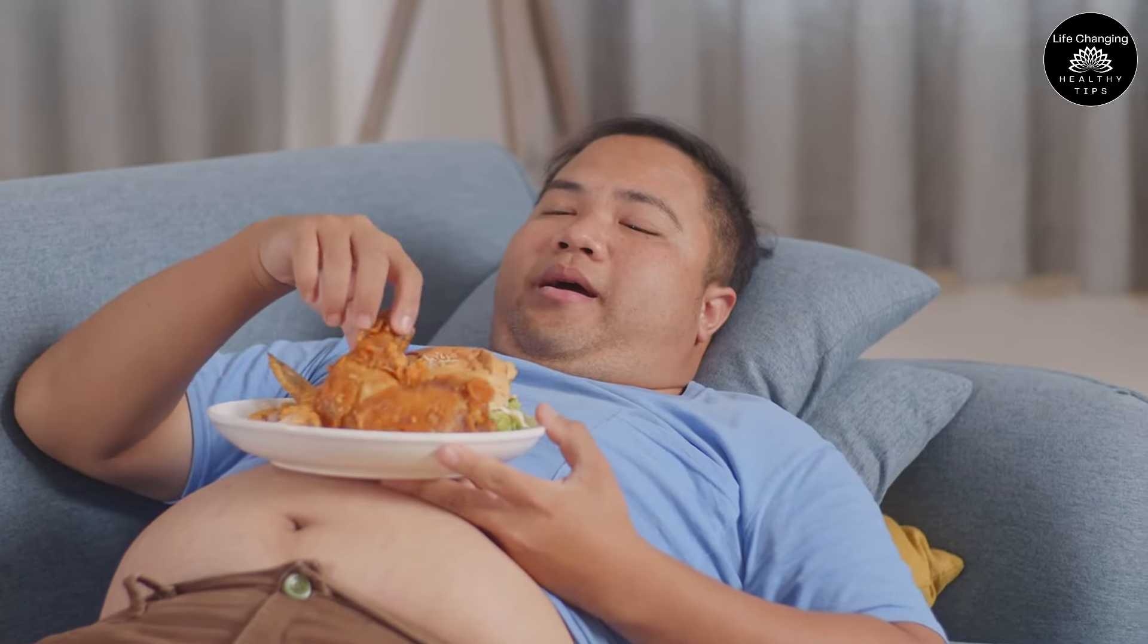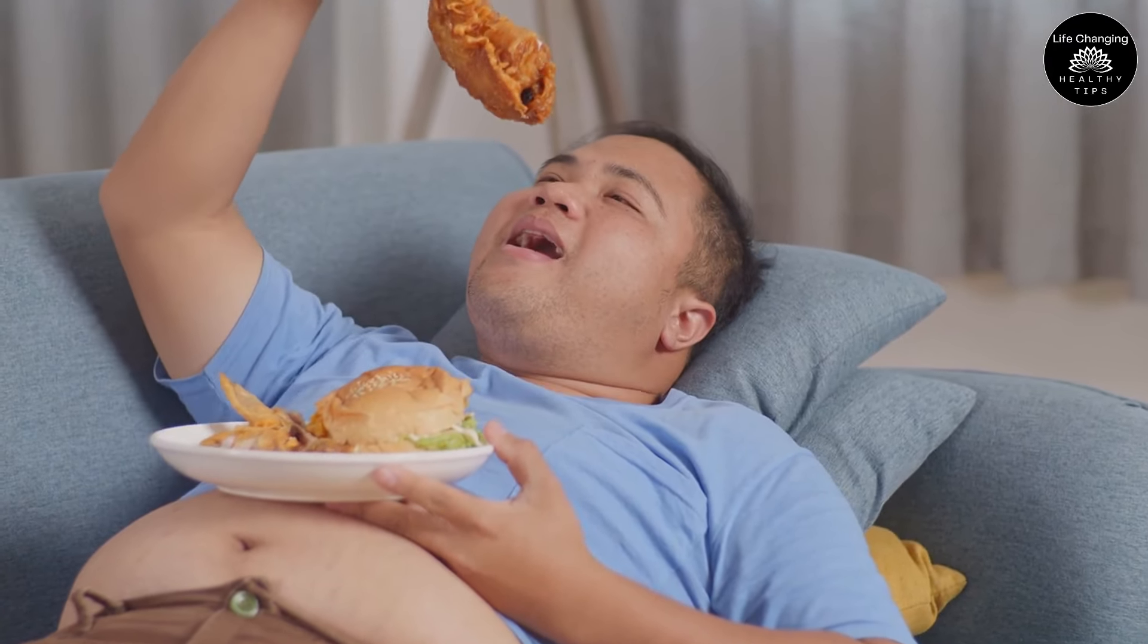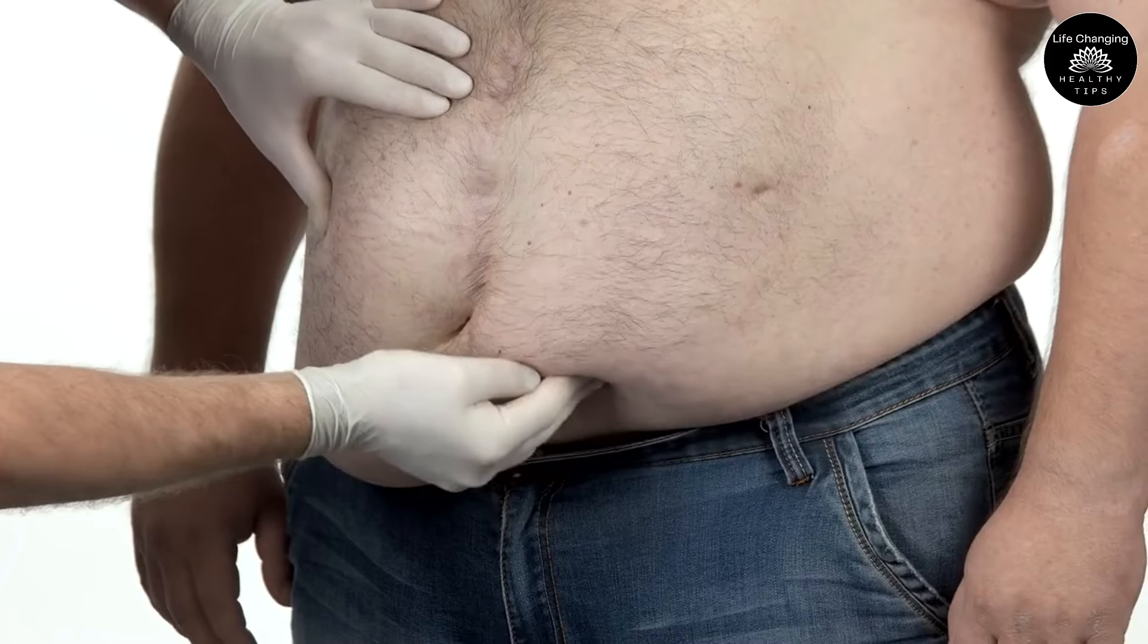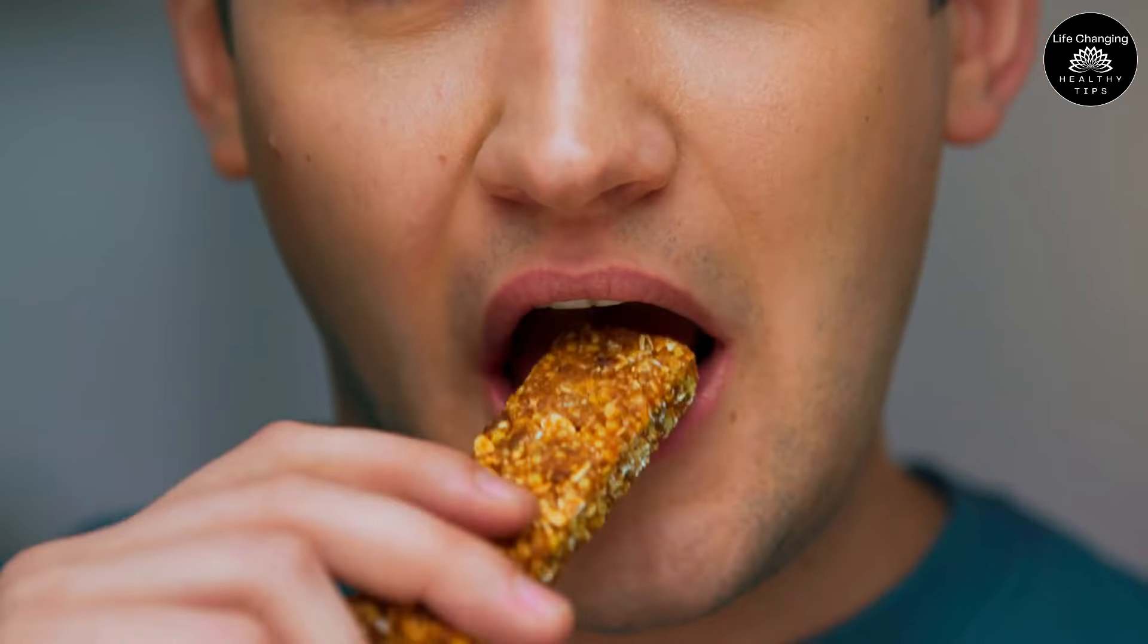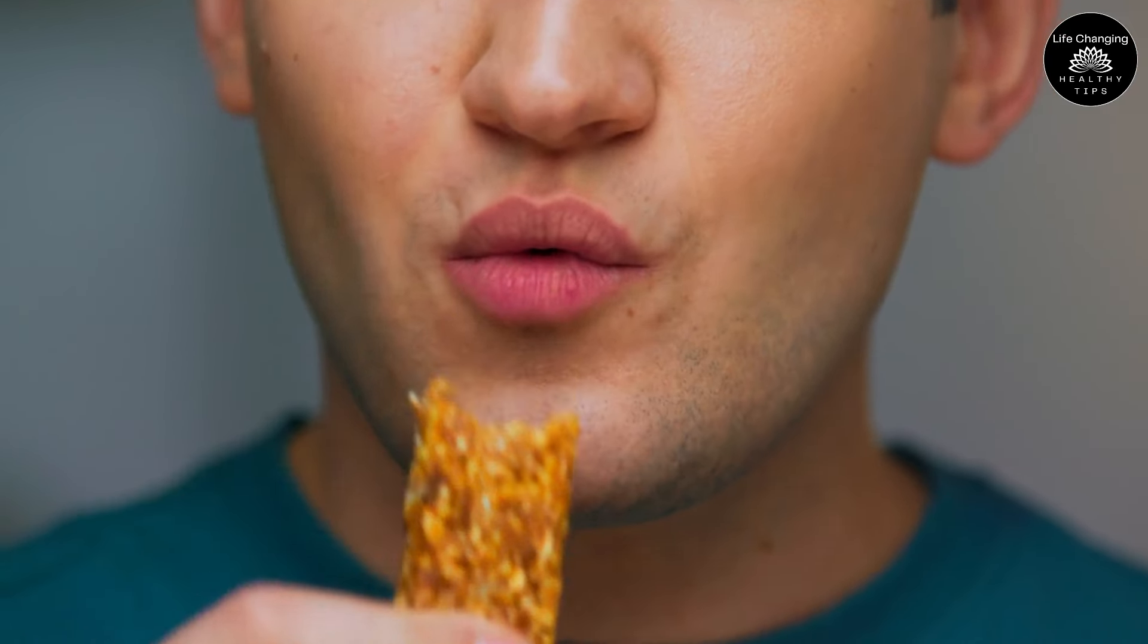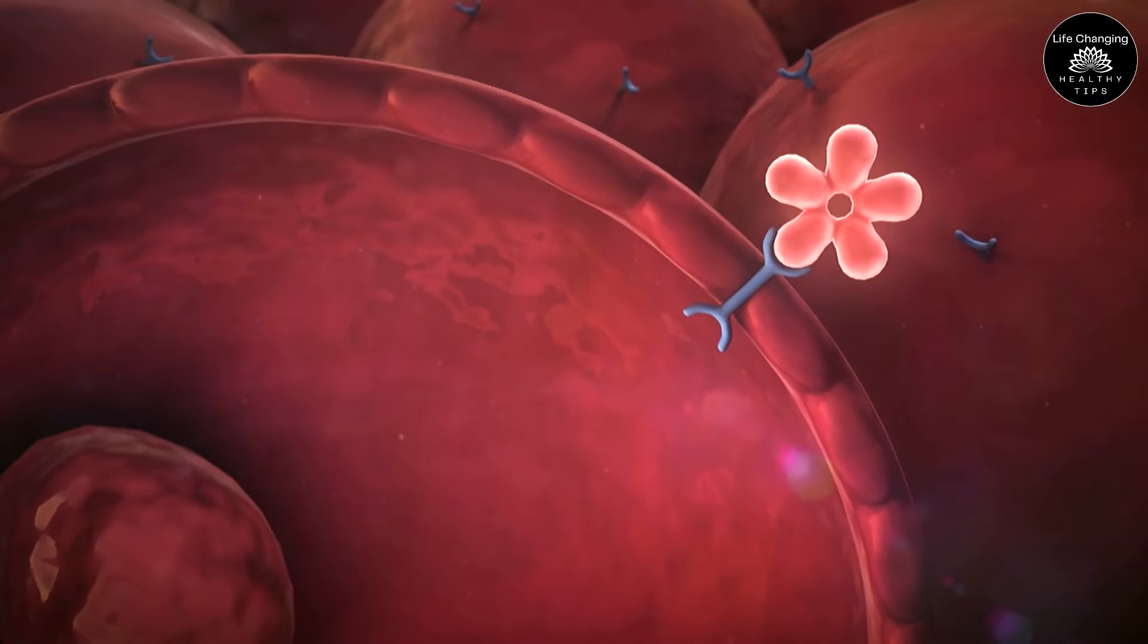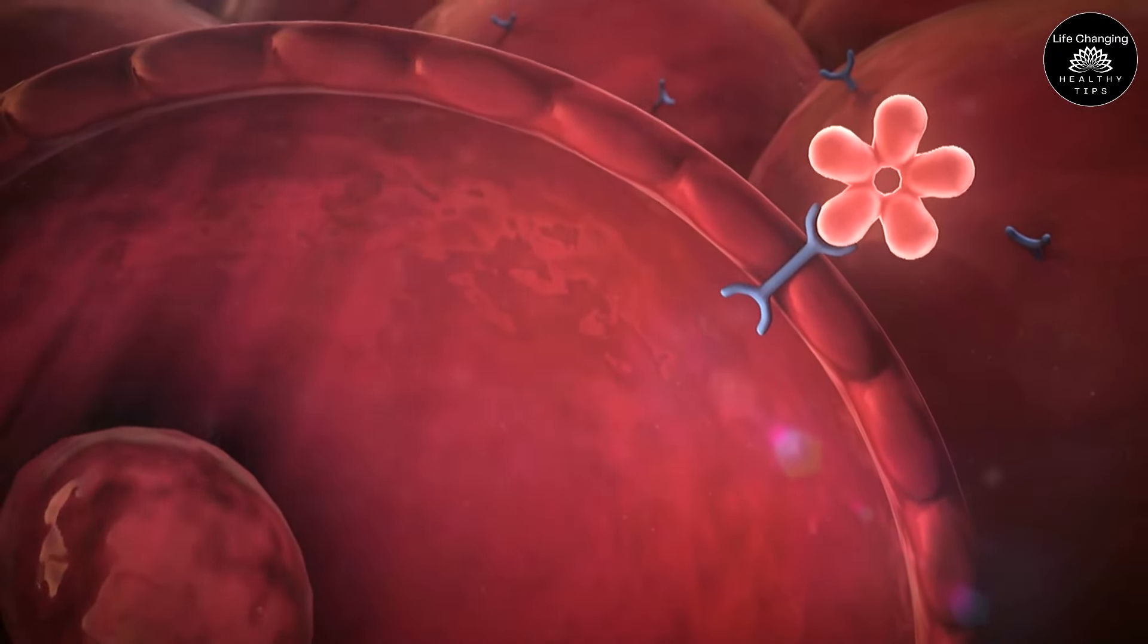These quick spikes not only trigger hunger and cravings but also promote the storage of excess glucose as fat, particularly around the belly area. People who consume fewer refined carbohydrates and more whole grains are able to stabilize their blood sugar levels, which in turn reduces the release of insulin and inhibits fat formation.